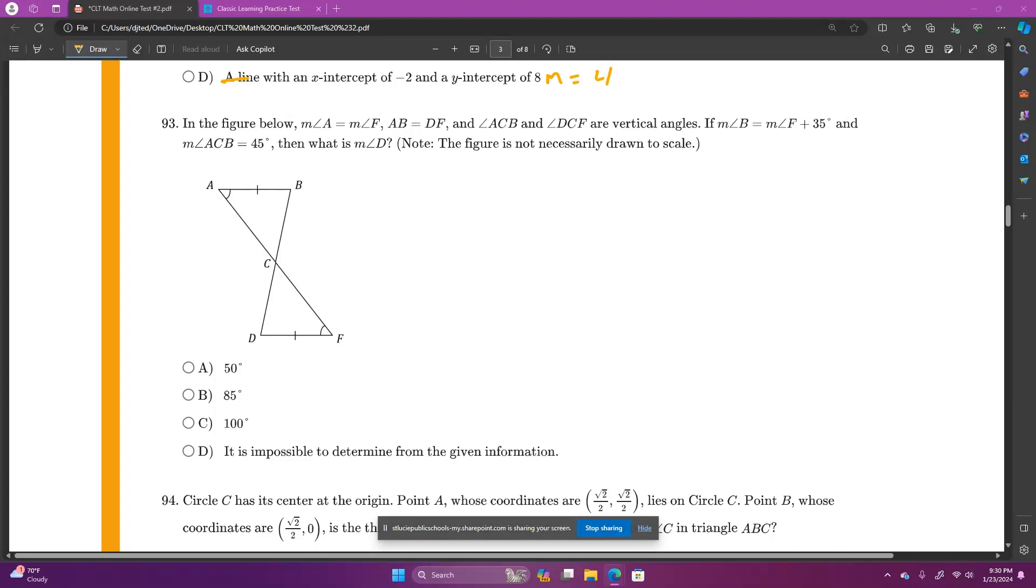And here we go, moving on to question number 93. In the figure below, the measure of angle A equals the measure of angle F, and those are marked congruent already. Line segment AB equals line segment DF, those are marked congruent. Angle ACB and DCF are vertical angles. We can see they're across from each other, and we know that all vertical angles are congruent.